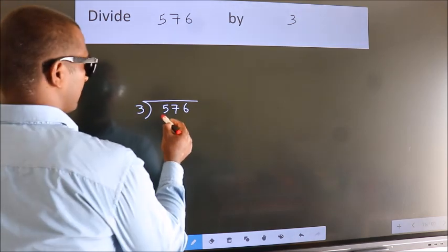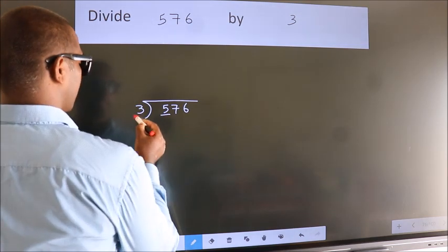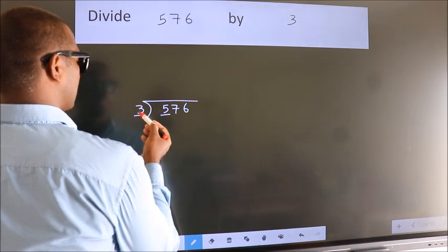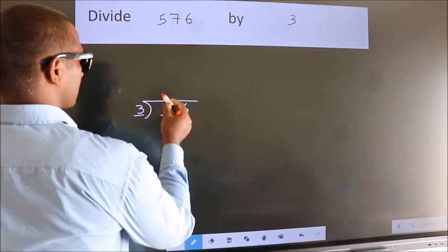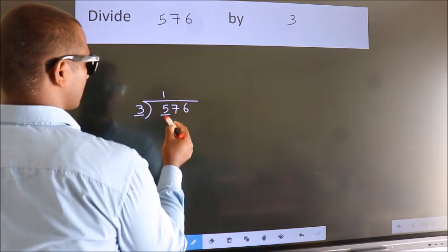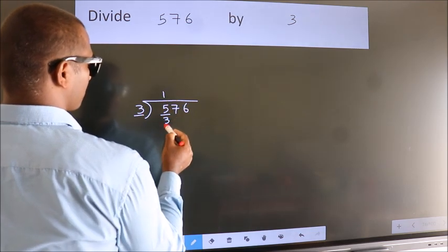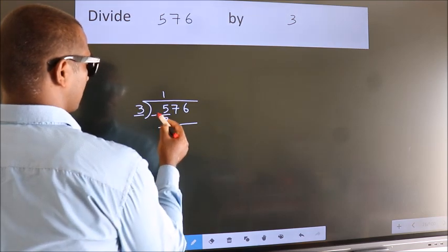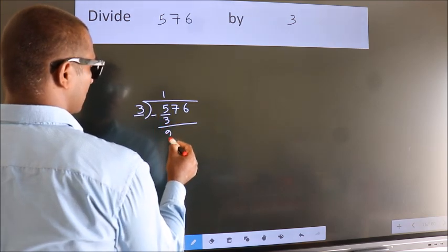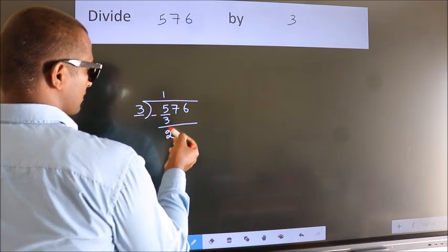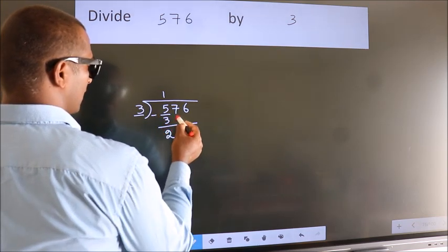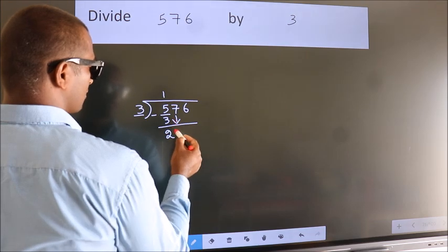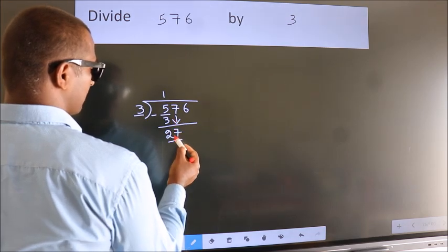Here we have 5, here 3. A number close to 5 in the 3 times table is 3 ones — 3. Now we should subtract. We get 2. After this, bring down the beside number. So, 7 comes down, giving us 27.